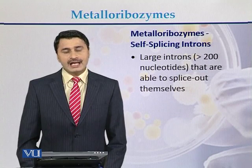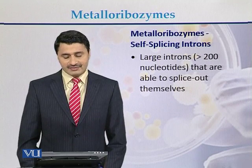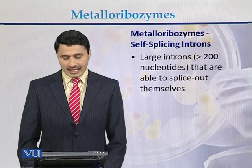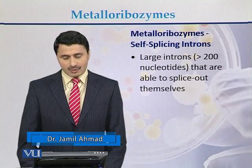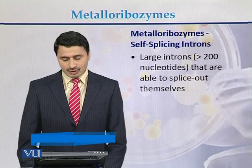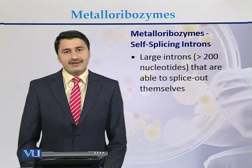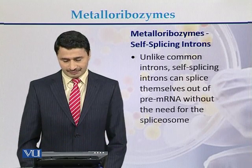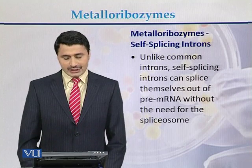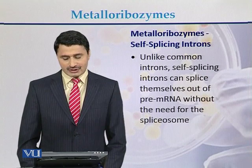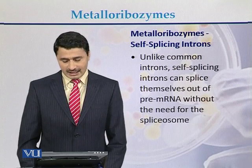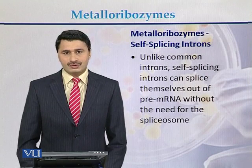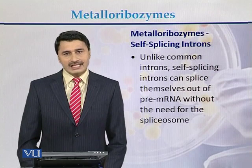On the other hand, the second type of metalloribozymes are self-splicing introns. Large introns, which are usually greater than 200 nucleotides, are able to splice themselves out of the sequence, so those are called self-splicing introns. Unlike common introns, self-splicing introns can splice themselves out of the pre-messenger RNA without the need of the spliceosome.